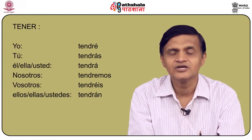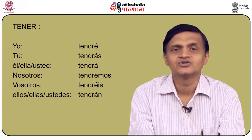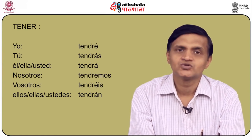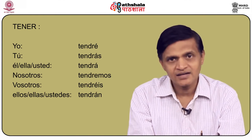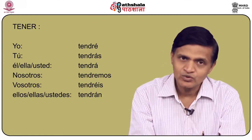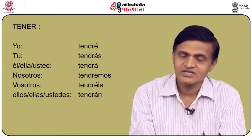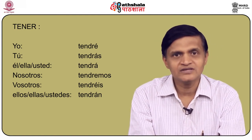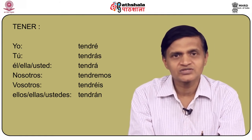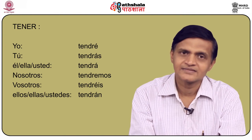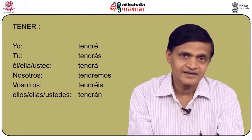How do you do the conjugation of another verb which is very important and very frequently used in Spanish, which is tener, to have? The conjugation of tener is yo tendré, tú tendrás, él/ella/usted tendrá, nosotros tendremos, vosotros tendréis, and ellos/ellas/ustedes tendrán. It is very easy and it is very important to learn a verb like tener.